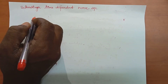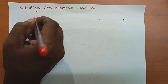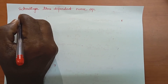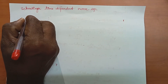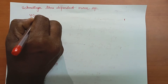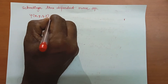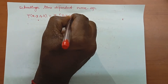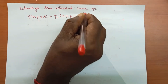Next topic is Schrödinger time-dependent wave equations. We already know that ψ(x, y, z, t) is equal to ψ₀(x, y, z) into e to the power minus iωt.